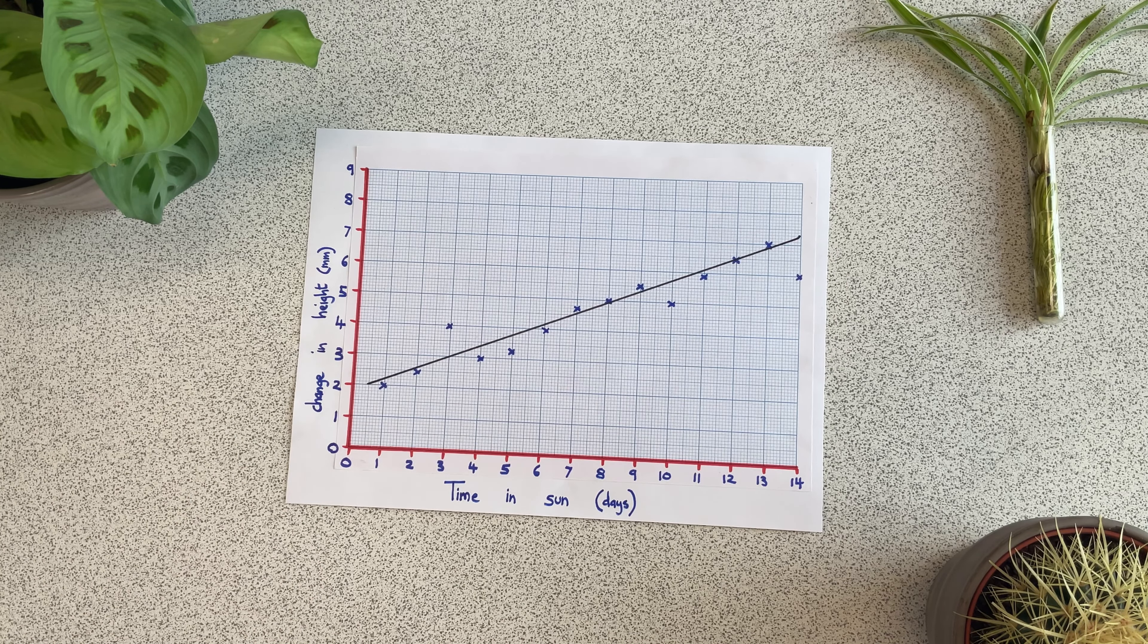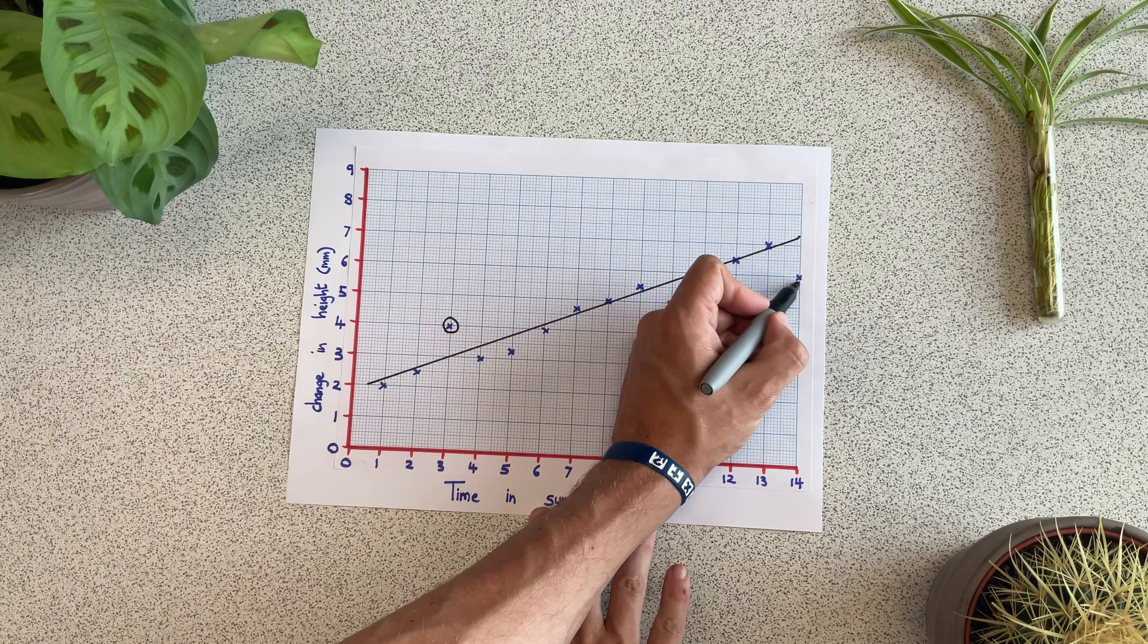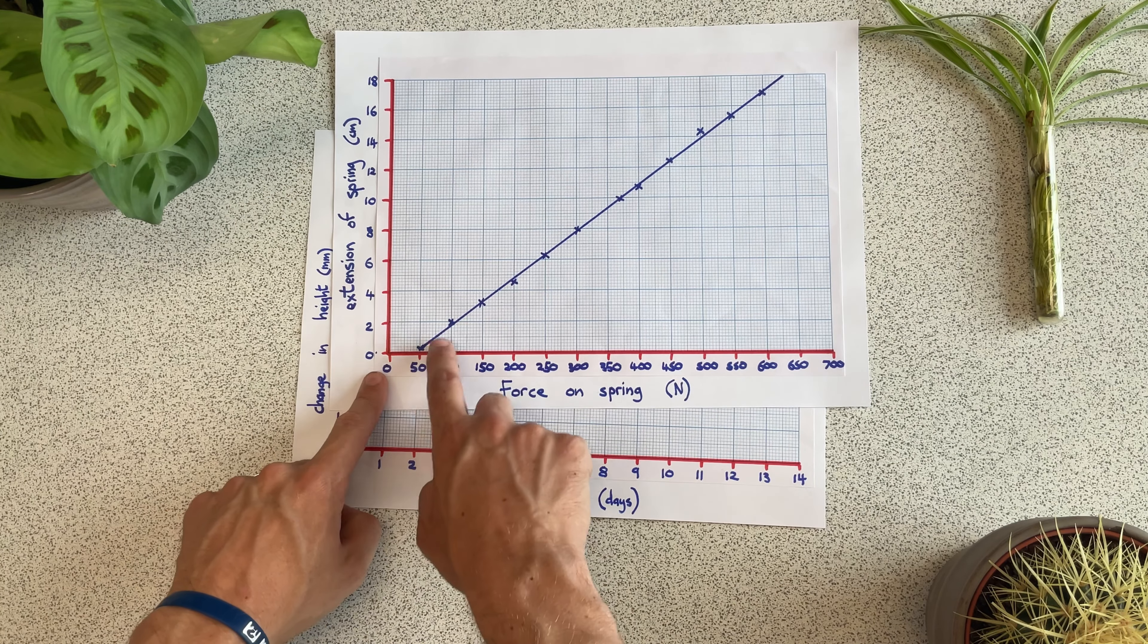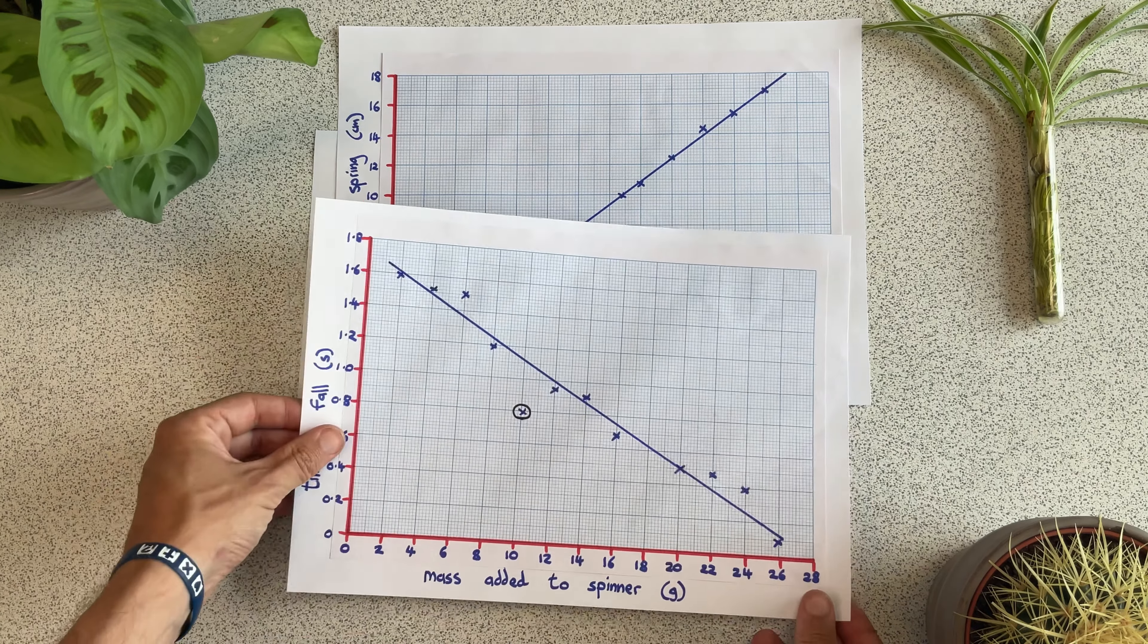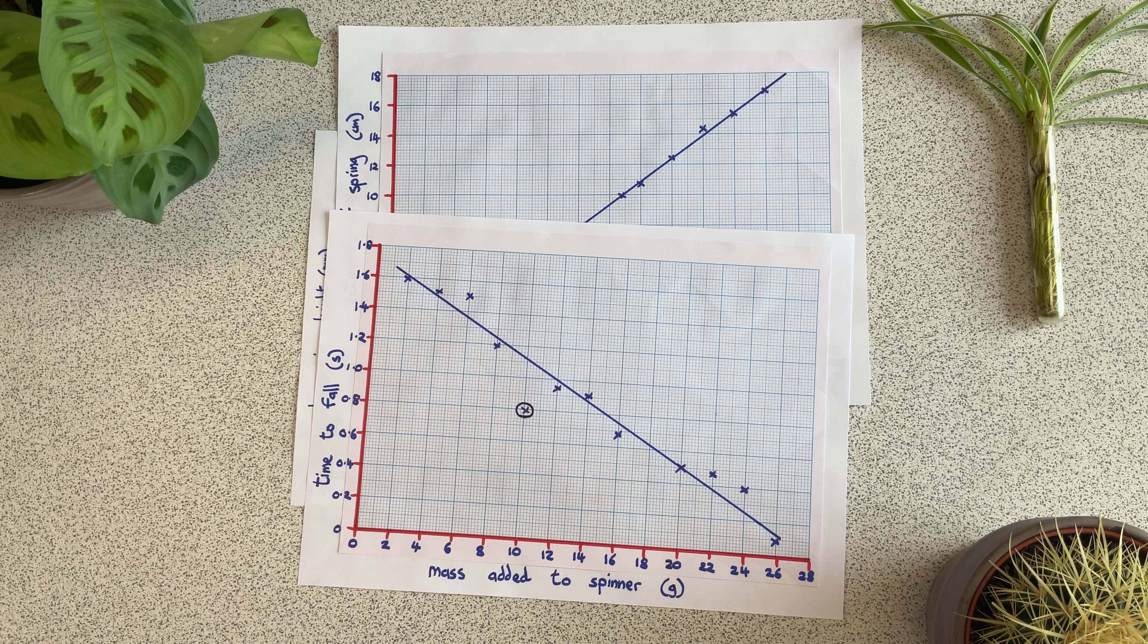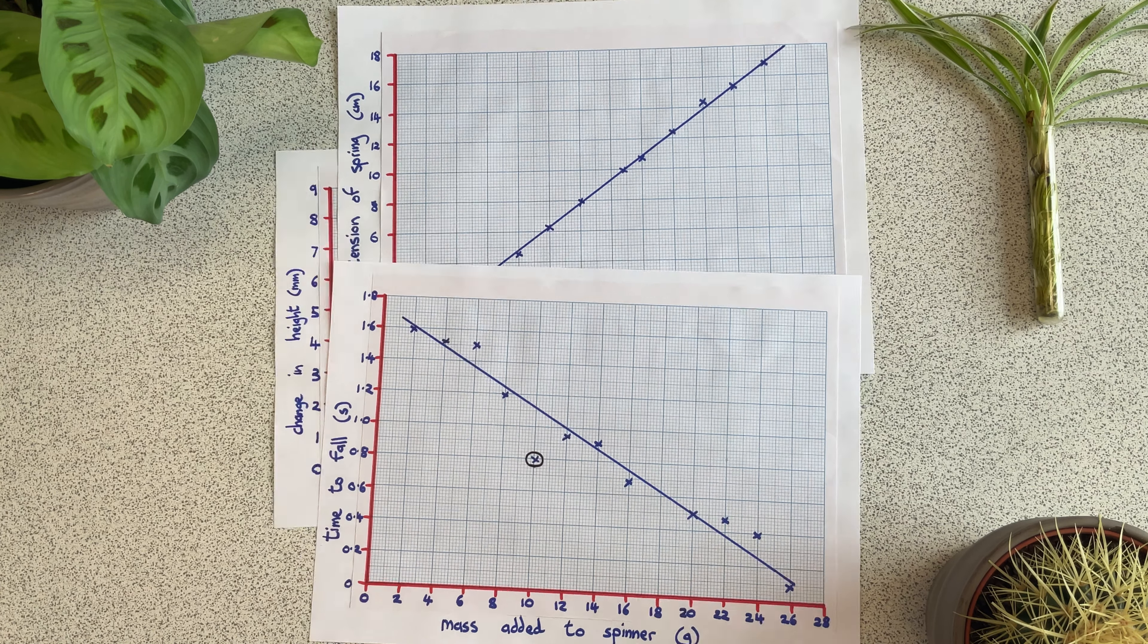After you've drawn your line of best fit, look to see if there's any point that's particularly far from the line compared to the others. Those points are anomalies and you circle them. Now, it's important to note that in some experiments, your line of best fit will touch or come close to most of the points, and in others, it won't. That doesn't matter. What you're looking for is that for your line of best fit, the points are roughly the same distance from your line and roughly the same number of points above and below your line of best fit.